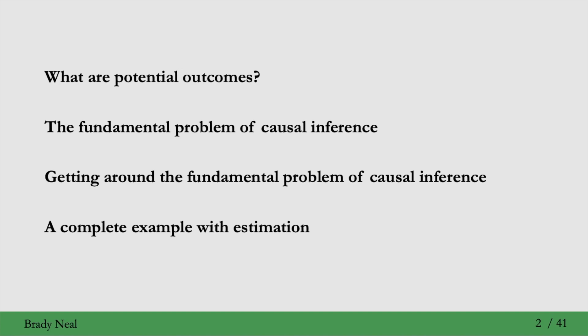Here's the outline. We'll start with what are potential outcomes, then cover the fundamental problem of causal inference, and talk about how to get around that fundamental problem. We'll finish with a complete example where we estimate specific numbers for causal effects. This is a lot of material, so it will be broken up into different small videos, but it's all one lecture in 41 slides, just in smaller segments.